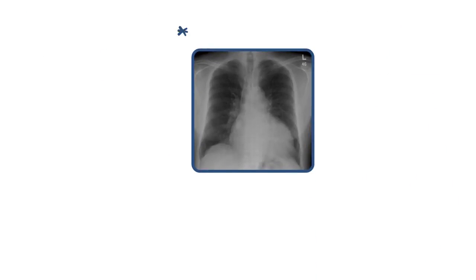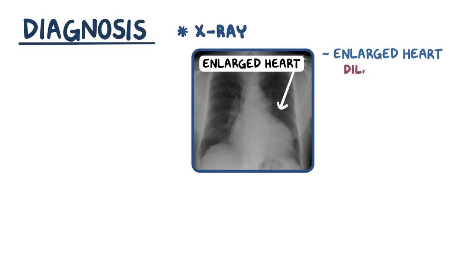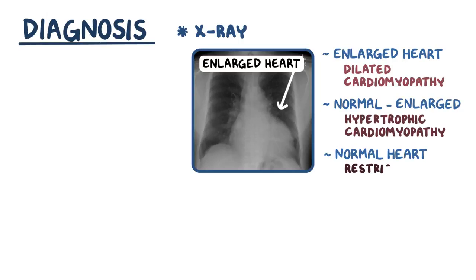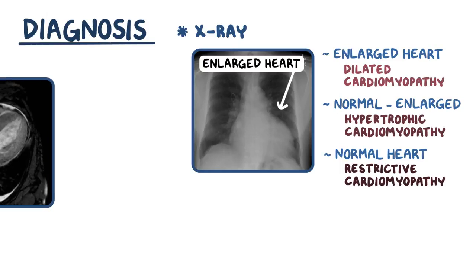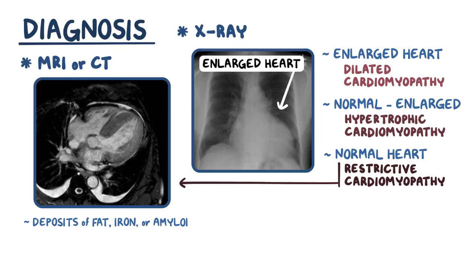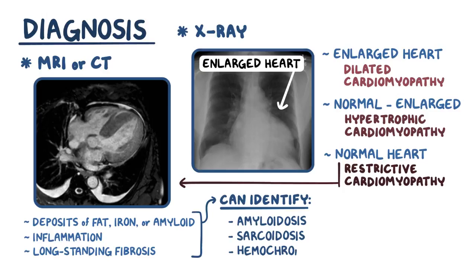Imaging with an x-ray can be helpful for diagnosing cardiomyopathy, showing an enlarged heart in dilated cardiomyopathy, a normal to enlarged heart in hypertrophic cardiomyopathy, or a normal heart shape in restrictive cardiomyopathy. In some cases, especially in restrictive cardiomyopathy, cardiac magnetic resonance imaging or computed tomography is done to look for deposits of fat, iron, or amyloid, as well as evidence of inflammation or long-standing fibrosis. This can help identify conditions like amyloidosis, sarcoidosis, and hemochromatosis.